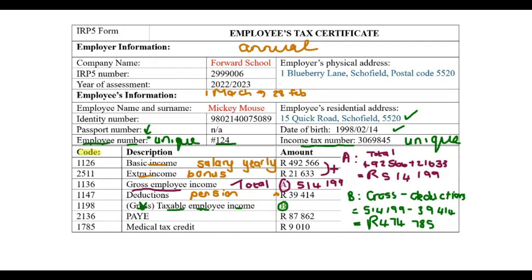This value — 474,785 — is used to determine your tax. PAYE shown here is the tax the company has already paid to SARS on your behalf during the year. Lastly, we see a medical tax credit. This employee has a medical aid, and it looks like the company pays for it so that he can get this tax credit back. You might not see calculations in your test — the idea is just to understand where everything comes from.